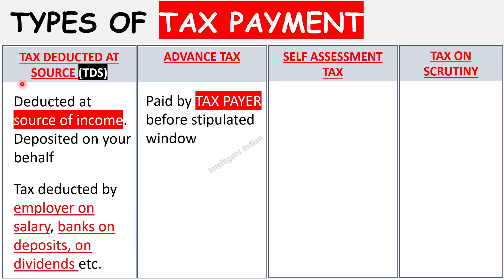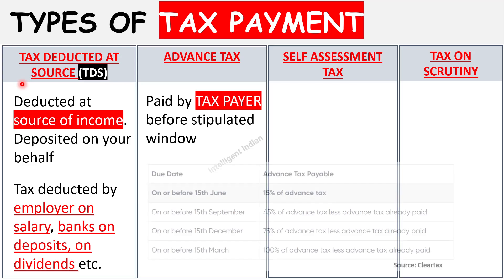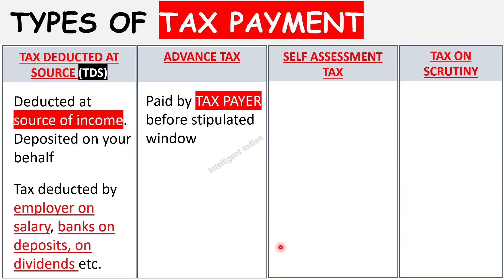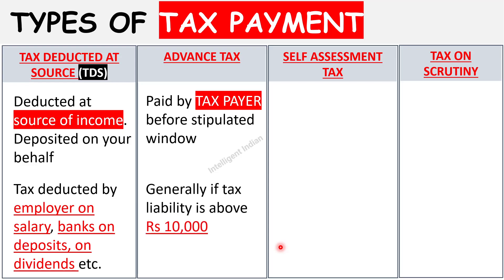Second is advance tax. This is paid by the taxpayer directly to the income tax department in four stipulated windows. The income tax department has rules on how much advance tax one must pay in these four windows: 15th June, 15th September, 15th December, and 15th March. This is not applicable to everyone — there are some exemptions which we will not get into right now.